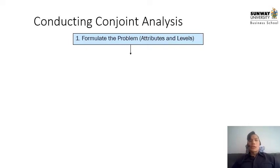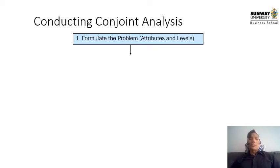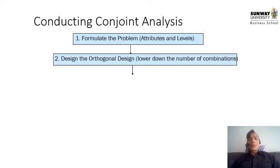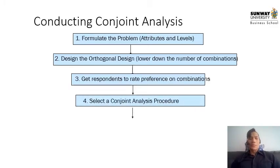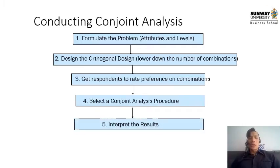Conducting a conjoint analysis involves: first, deciding what the attributes and levels are — what characteristics you're looking at. I would suggest not going beyond three levels because it can get complicated — if you're looking at colors, try to stick to three. Then you design an orthogonal design to lower the number of combinations, because looking at all combinations would be too difficult to analyze. Get respondents to rate their preference on these combinations, then select the conjoint analysis procedure, and then integrate the results.